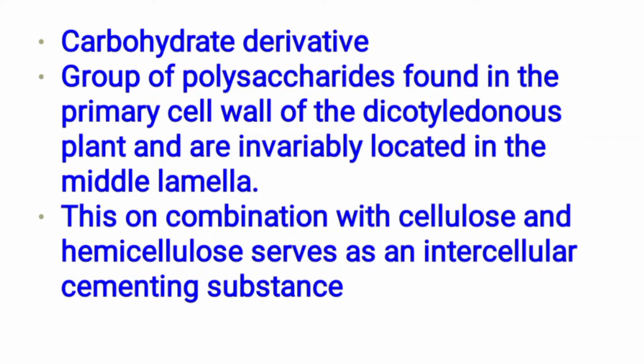Carbohydrate is a derivative of Pectin. Some polysaccharides are the same in monocot or dicot plants. The dicot plant has a primary cell wall, and in that region there is a group of polysaccharides which is Pectin.